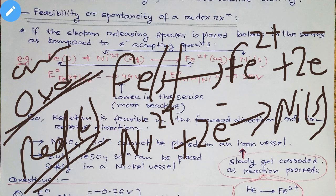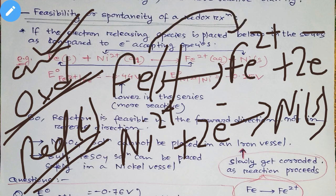This is the overall reaction. The oxidation half-cell reaction: iron will release two electrons and change to iron two-positive. The reduction half-cell reaction: nickel two-positive will accept the two electrons and change to nickel in the metallic state. So this is the overall reaction.